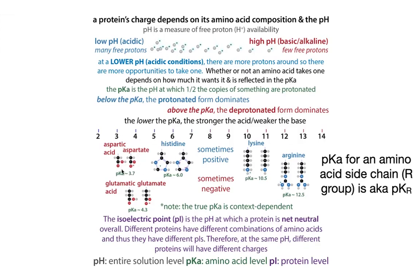We call these ones acidic because in their neutral form they act as acids — they give up that proton and now they're negatively charged, in their conjugate base form. And we call these ones the basic amino acids because in their neutral form they act as bases — they take a proton and therefore they're going to be positively charged.